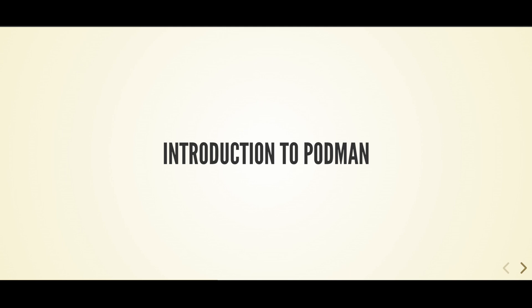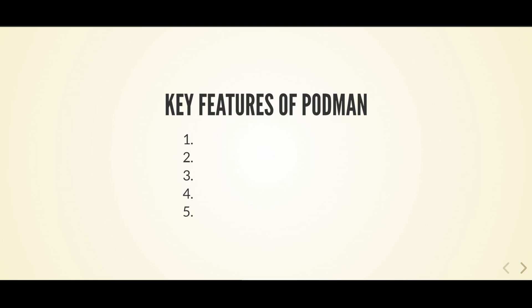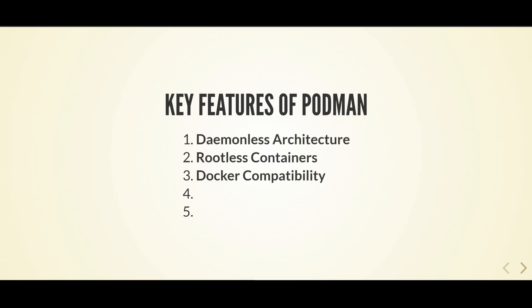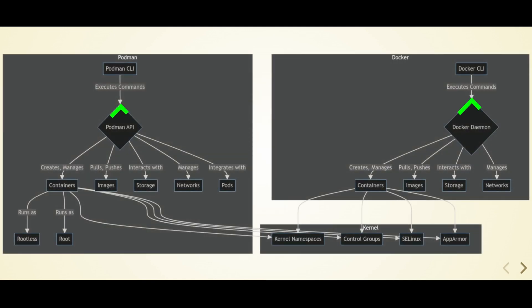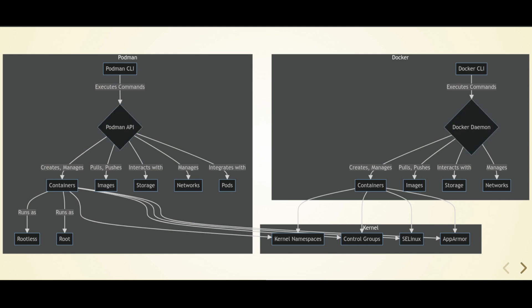Podman offers several key features that make it a powerful tool for managing containers: a daemon-less architecture, rootless containers, Docker compatibility, support for pods, and systemd integration. Unlike Docker, Podman operates without a continuously running background service. This reduces resource consumption and eliminates a single point of failure. Without a root-privileged daemon, Podman is less vulnerable to attacks. Podman uses system resources only when executing container commands, leading to more efficient resource utilization compared to Docker, which consumes resources continuously for its daemon.